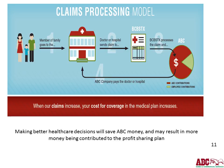You and your covered dependents will see your doctor or go to the hospital just like today, and those claims will be sent to Blue Cross Blue Shield of Texas, who processes them. The claims are then actually paid by ABC, not Blue Cross Blue Shield — they issue the check, but the funding comes from ABC directly. When claims increase, your cost of coverage increases. Making better healthcare decisions will save ABC money and may result in more money contributed to the profit-sharing plan.